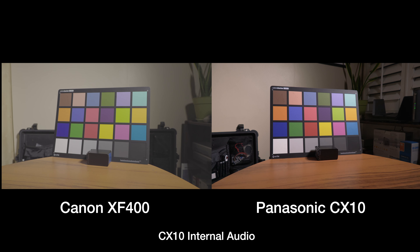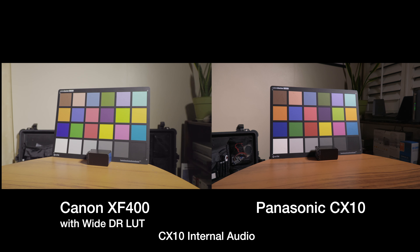I brought the gain down to 9 to see the moon. Can you see the moon? There's the moon off on the left. This is the max zoom. The Canon is at F11 now, and the Panasonic is at F7.6.